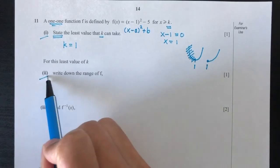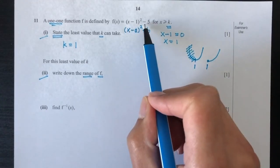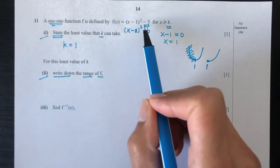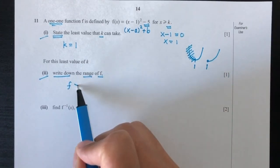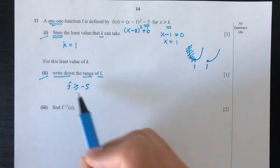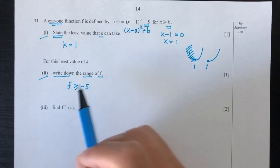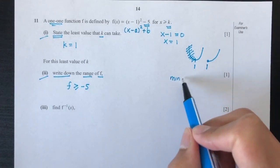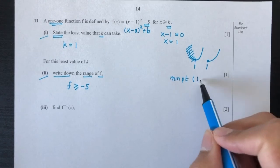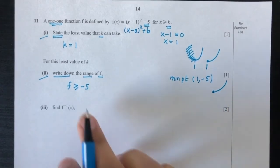Part 2: write down the range of f. Since the curve goes upward from the minimum point (1, −5), the range of f is f(x) ≥ −5. The minimum point of the curve is (1, −5).